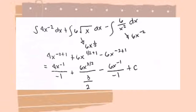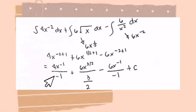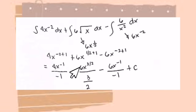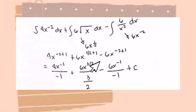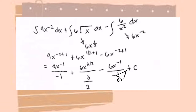The exponent became negative 2 because we moved x squared from the denominator. Now solving: 4x raised to negative 2 plus 1 becomes 4x raised to negative 1 over negative 1. Plus 6x raised to 1 half plus 1, giving x raised to 3 halves over 3 halves. Minus 6x raised to negative 2 plus 1, giving 6x raised to negative 1 over negative 1, plus C.